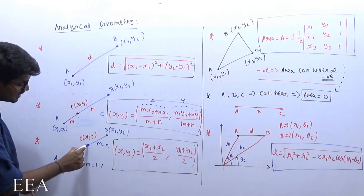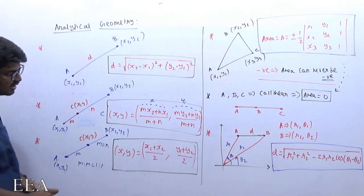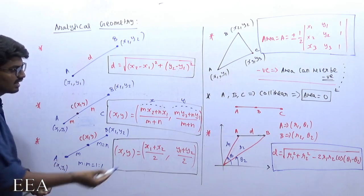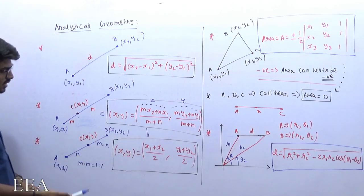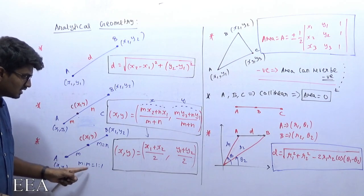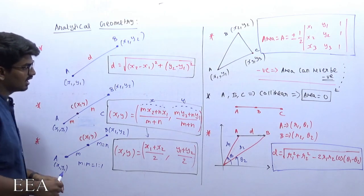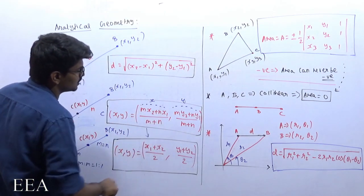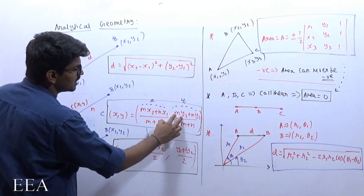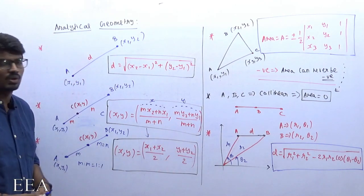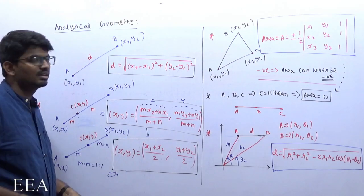Now, if point C is dividing the line equally — in the ratio 1 to 1 — then it becomes very simple. Directly x equals (x1 + x2) / 2 and similarly y equals (y1 + y2) / 2. This midpoint equation is derived from the previous section formula. If M = N = 1, substituting gives 1·x2 + 1·x1 divided by 1 + 1, which is (x1 + x2) / 2, and similarly (y1 + y2) / 2.